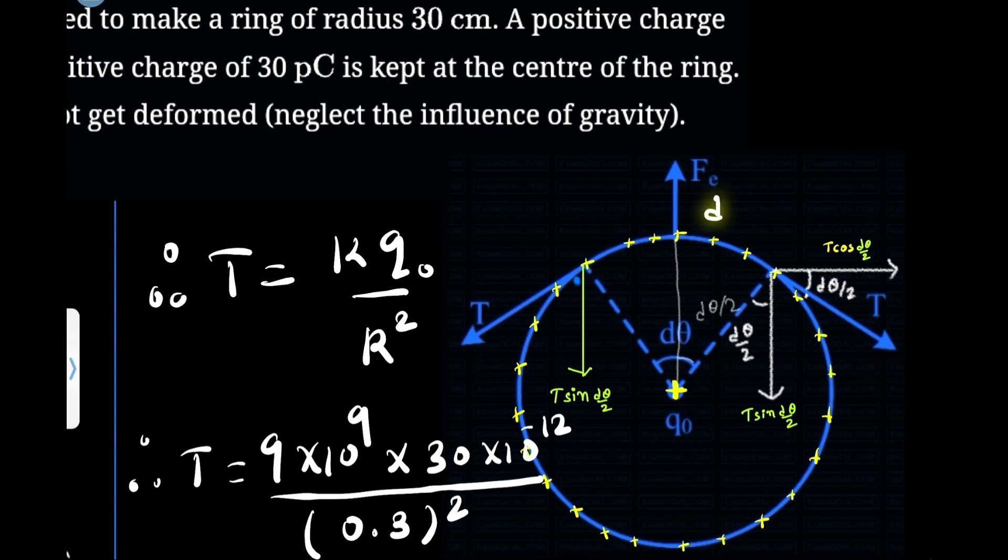Now what is happening? This dq charge which is here in this arc will get repelled by this charge according to Coulomb's repulsive force, because both are positive. So they will repel.